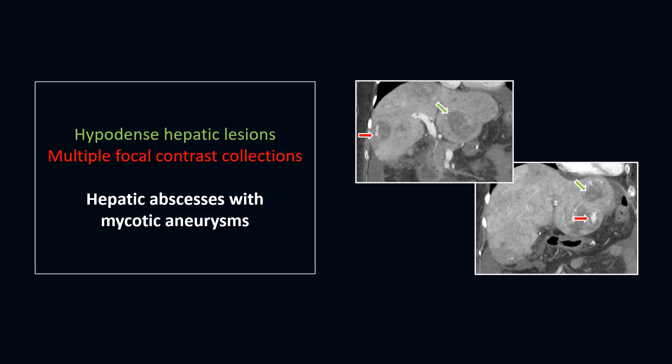Mycotic aneurysms are due to infection of the arterial wall, usually by bacteria. The cause is hematogenous spread of bacterial infection, classically from the heart. They are usually saccular, found in odd locations, and carry a high risk of mortality. Complications include a high risk of rupture, ongoing source of sepsis, and embolic infarction.